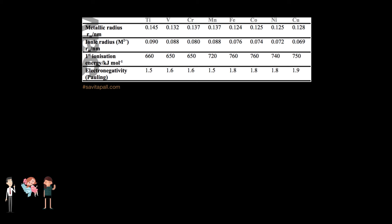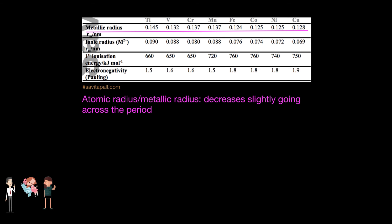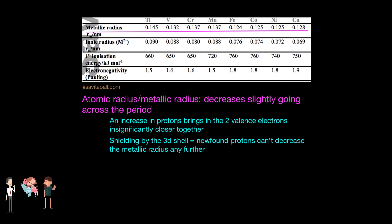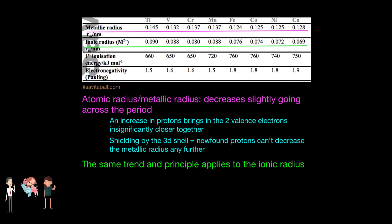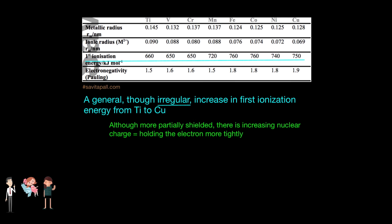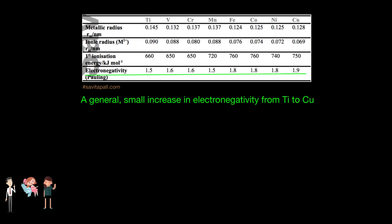Although transition metals share similar periodic trends, there's still a small difference in the five main trends. Beginning with the atomic radius, or the metallic radius, it decreases ever so slightly going across the period as a result of an increase in protons, which brings the only two valence electrons insignificantly close together. As a result of the shielding brought by the 3d shell, the newfound protons cannot decrease the metallic radius any further. The same trend and principle applies to the ionic radius. Furthermore, there is a general, though irregular, increase in the first ionization energy from titanium to copper — the electron removed is progressively more tightly bound because, although it is more partially shielded, there is an increasing nuclear charge. And to conclude, there is a slight general increase in electronegativity from titanium to copper, since this parallels the decreasing atomic radius and stronger effective nuclear charge, making it more likely to attract a bonding pair of electrons.